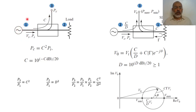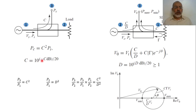We are going to start with measuring the coupling in the forward direction — calculating the power at port three due to the incident power at port one. We connect the directional coupler with the input power at port one, the load at port two, and the measuring meter connected to port three. In this case, the coupled power equals C squared multiplied by the incident power, or equivalently, the coupling coefficient C equals 10 to the power of minus C(dB) over 20.